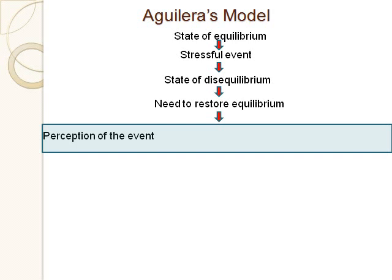Think about locus of causality — internal versus external. When something bad happens, you can have the unrealistic perception that there's an internal cause, that it's your fault, when it actually wasn't. Conversely, there may be situations where you have an external locus of causality when it should be internal — for example, a crisis resulting from substance dependence where your own actions are causing problems, but you externalize it and say it's the system that's against you. Figuring out where the locus of causality realistically belongs is important.